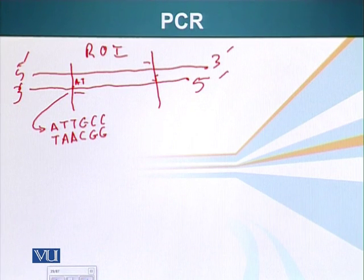We will also make another primer which has a complementary sequence to this part. So the polarities, let's also put down the polarities. The polarity would be 5 prime and 3 prime. Here it will be 5 prime and 3 prime.